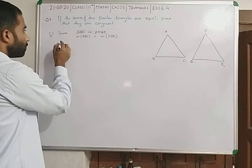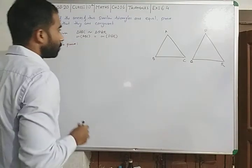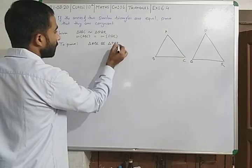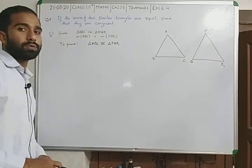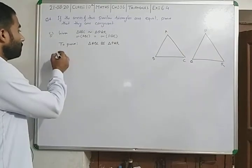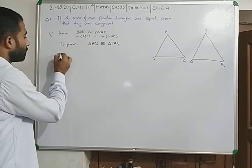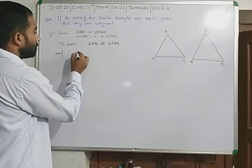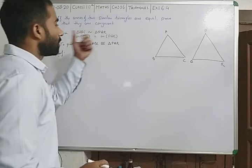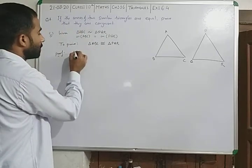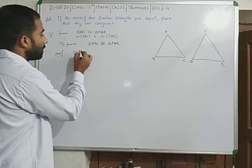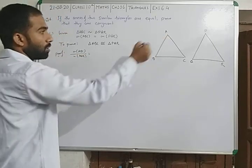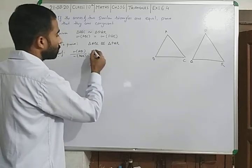To prove: triangle ABC is congruent to triangle PQR. Proof: the area of triangle ABC upon area of triangle PQR is equal to the corresponding ratio of the corresponding sides squared.